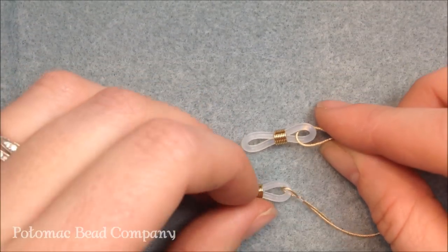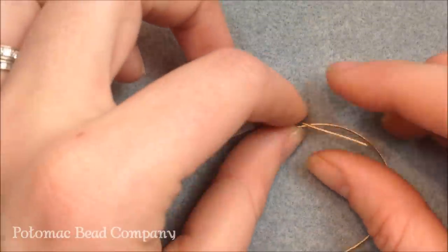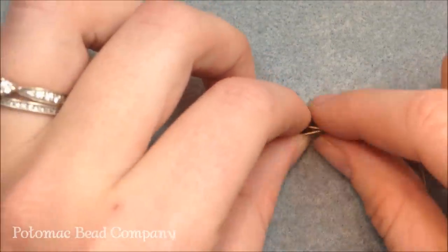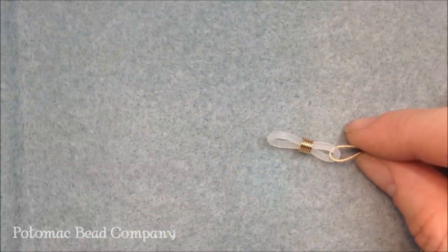So eventually what you'll have is you'll have the two eyeglass holders with a longer piece of wire that's all beaded, and the two crimp beads at the end. And that's how you make eyeglass holders.